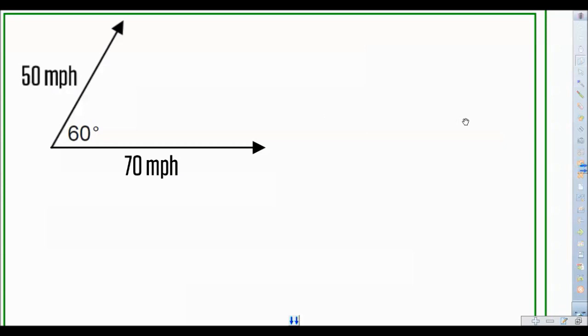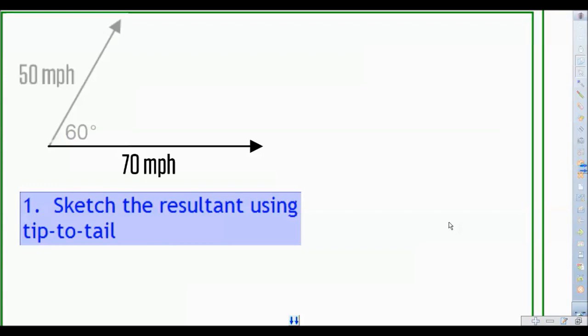Now what makes this problem such a basic problem to solve, and such an easy problem to solve, is the fact that one of the vectors here, specifically the 70 mile an hour vector, is a straight up horizontal vector with a direction of exactly zero degrees. This makes the resultant pretty easy to calculate when we're looking at finding the direction here. Let's go ahead and do step one, which is sketching the resultant using tip to tail.